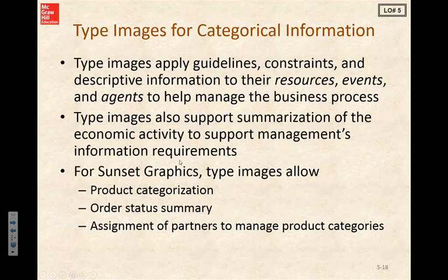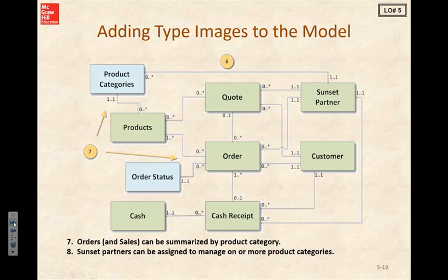Type images also support summarization of the economic activity, and this is really to support management's information requests. Sunset Graphics is going to give us some type images they would like to see for management purposes: product categorization, order status summary, and assignment of partners to manage product categories. These type images — shown here in the blue boxes as product categories and order status — will allow Sunset to establish appropriate categories for the related classes. For products there'd be different product categories they could run reports on, and for orders there'd be different order statuses, such as just-entered or completed orders.